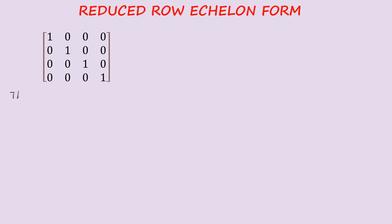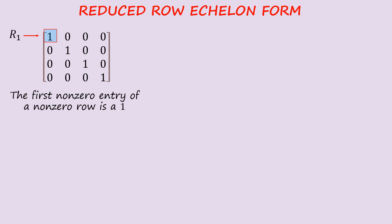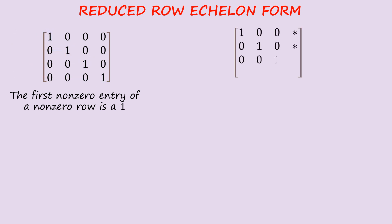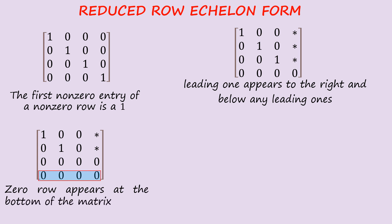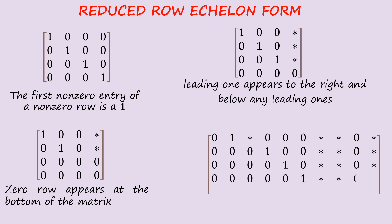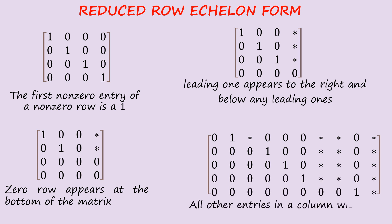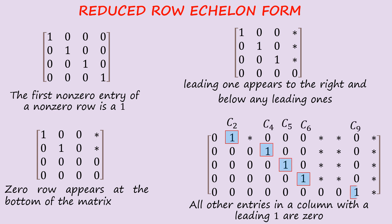Examples for the properties of RREF: the first non-zero entry of a non-zero row is 1 — R1 and R2 both start with 1 as the leading non-zero entry. The leading one appears to the right and below any leading ones. Zero rows appear at the bottom. All other entries in a column with a leading one are 0 — columns C1, C4, C5, and C6 each have 0 both below and above the leading one.